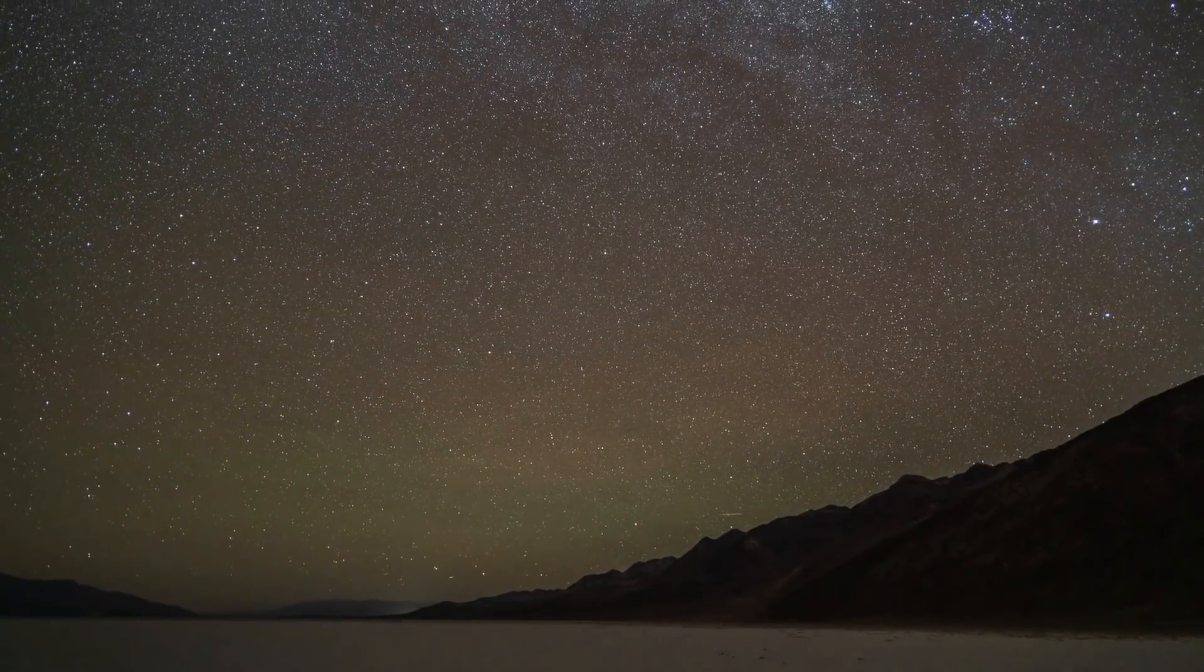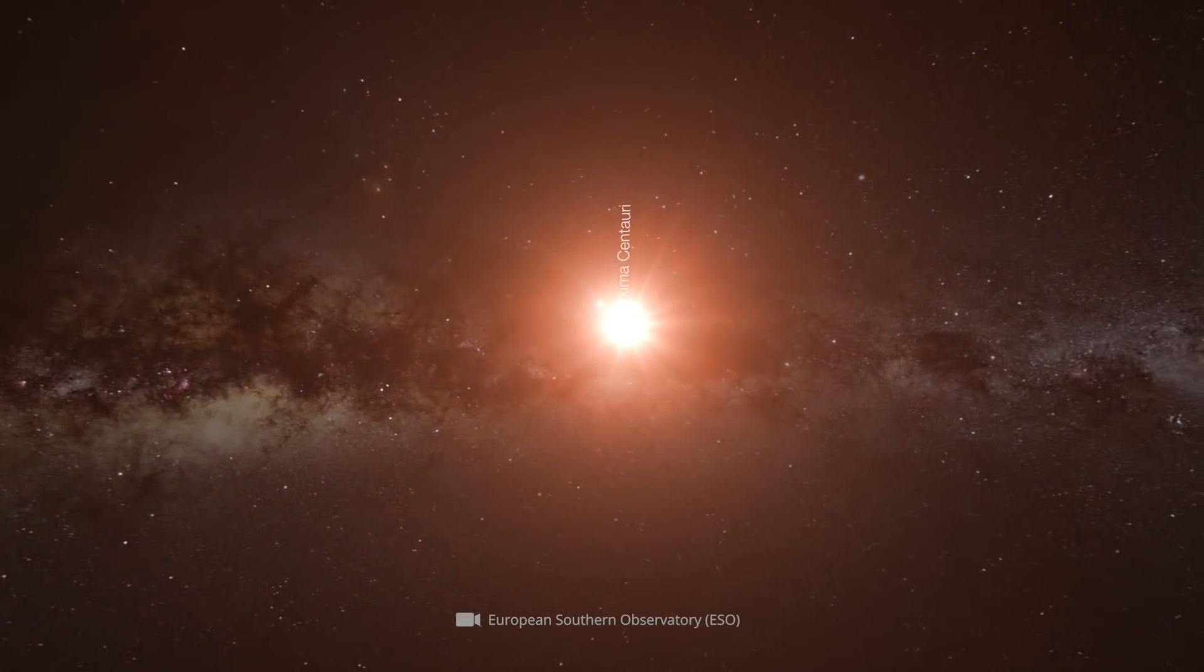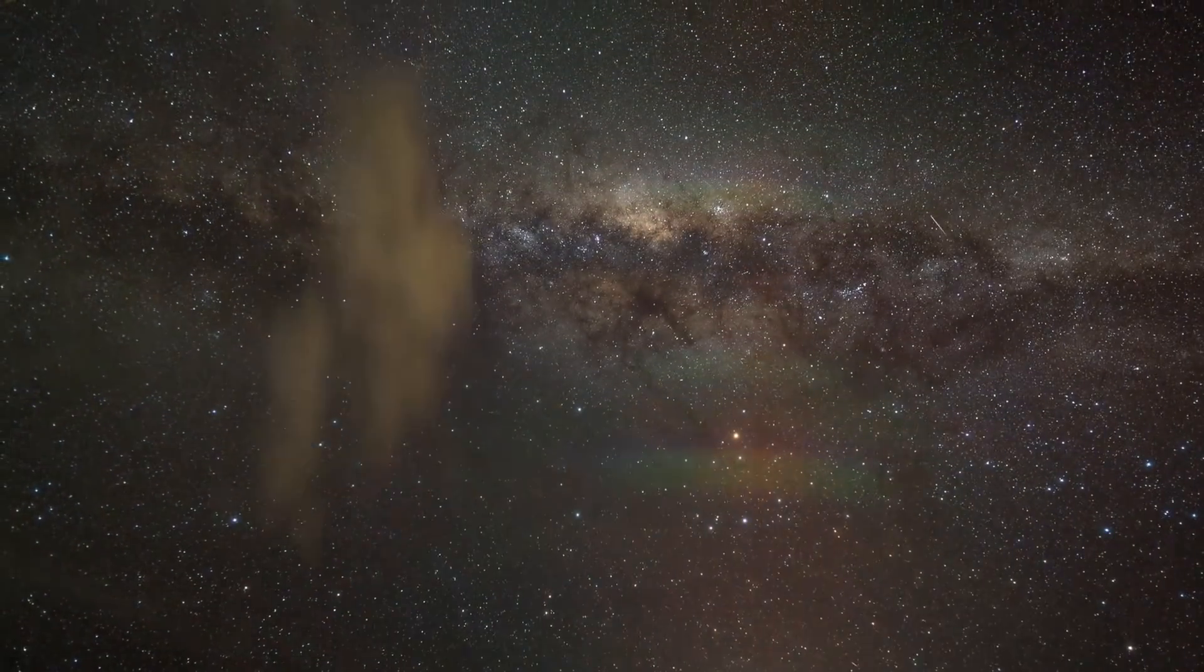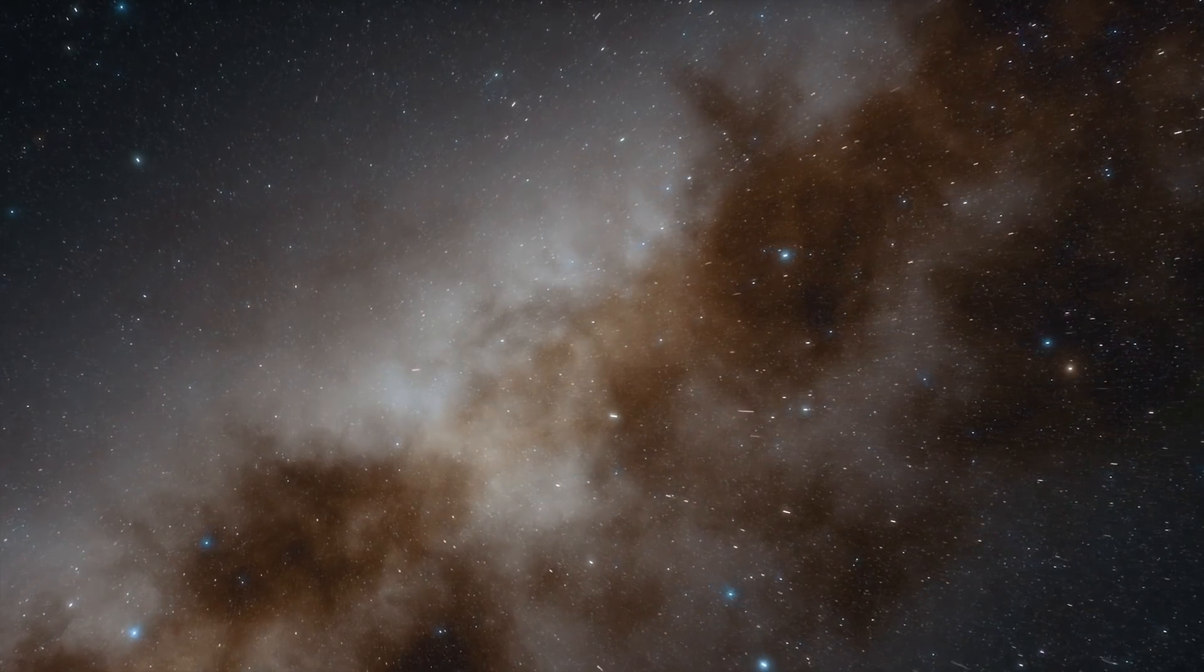However, before Proxima Centauri orbits its counterparts, a tremendous amount of time elapses. The orbital period is about 600,000 years. Because of these circumstances, the object in the southern sky is sometimes called Alpha Centauri C.